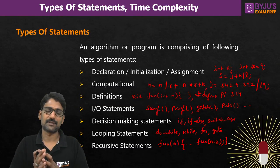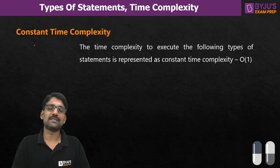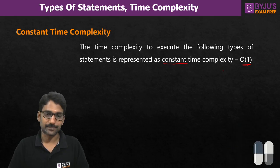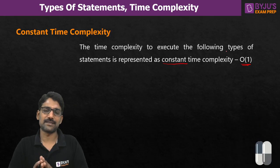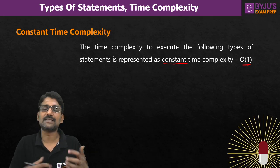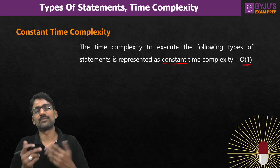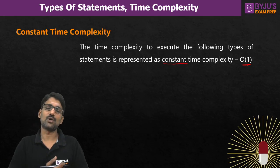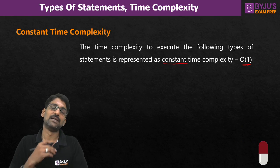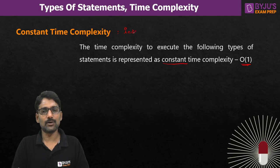The time complexity to execute certain statements is always represented as constant — that is, O(1). Constant time complexity means a statement may take two, three, five, or ten units of time. Any constant value we represent as O(1), meaning it takes constant time irrespective of the input size. Constant time complexity is independent of input size.